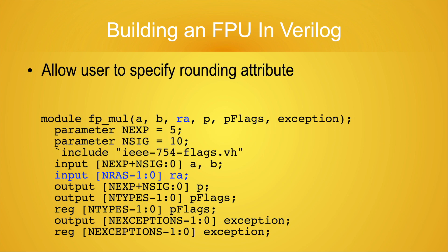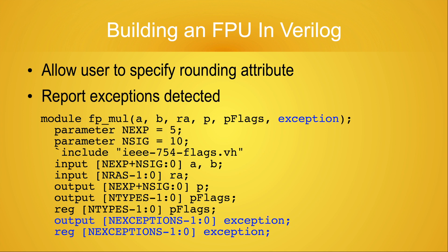In order to perform rounding, there has to be a means for the user to specify which rounding attribute is desired. This leads to the new input value RA. The rounding module also reports whether or not the result of the rounding operation triggers an inexact exception. The IEEE 754 standard calls out five different exceptions which must be detected and reported. For that reason, I've also added the bit vector exception to the argument list for the FPMol module.